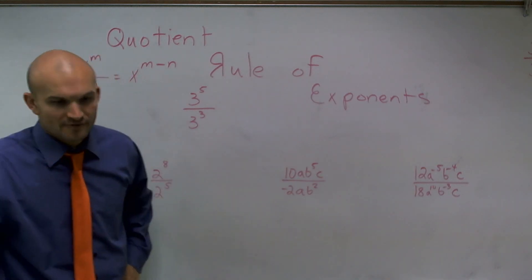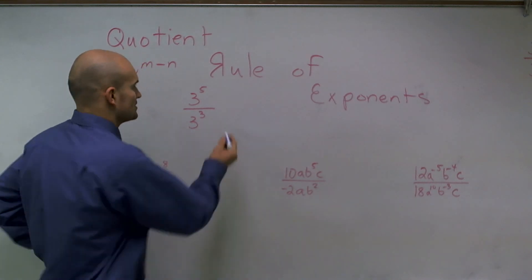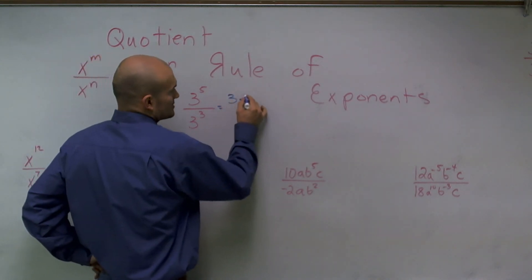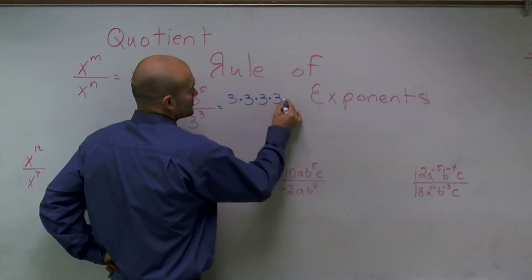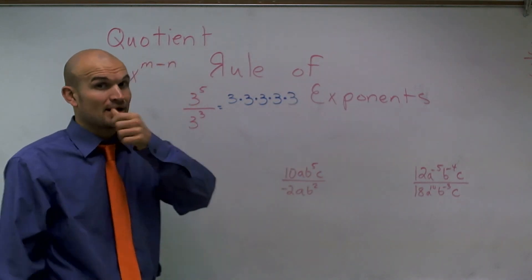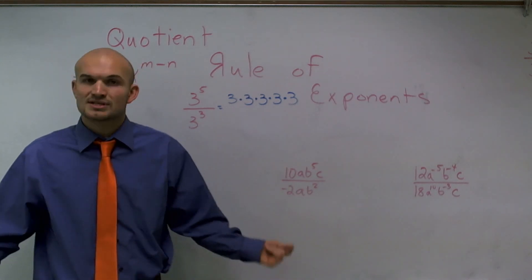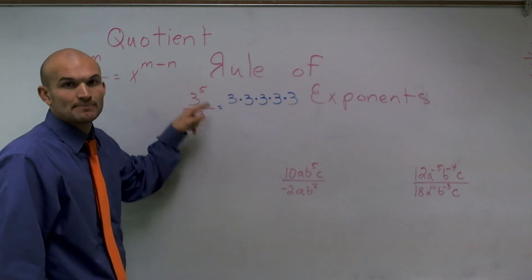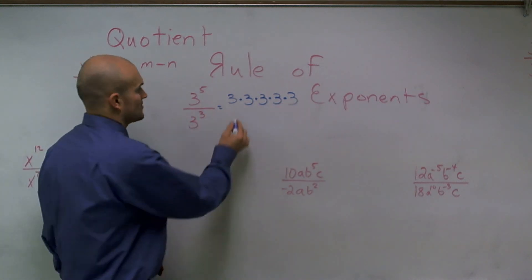Let's say we have 3 raised to the fifth power. That means that representation would be 3 times 3 times 3 times 3 times 3. Just understand that 3 to the fifth power is 3 multiplied by itself five times.